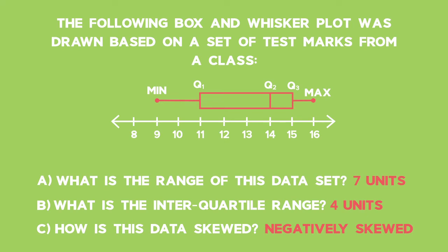What's important to note is that everything within this box represents 50% of the class's marks. So if there was a class of 30 learners, 15 of them got between 11 and 15 marks. So that's what the interquartile range is.